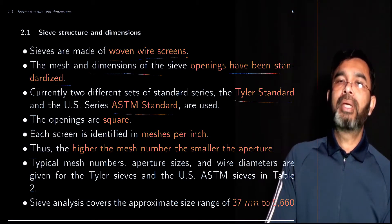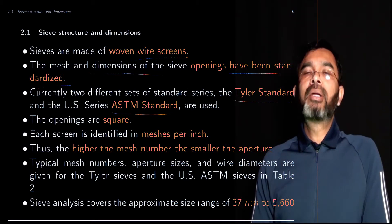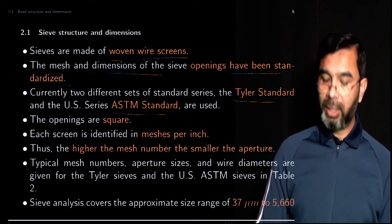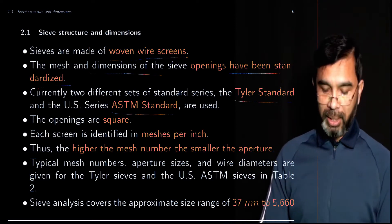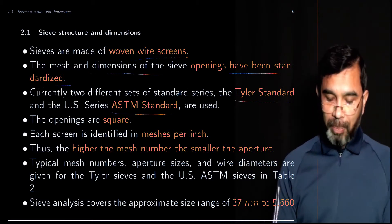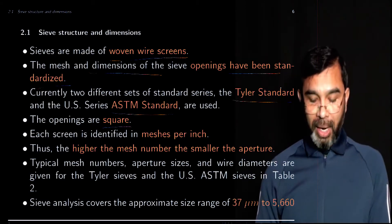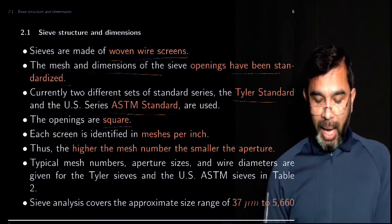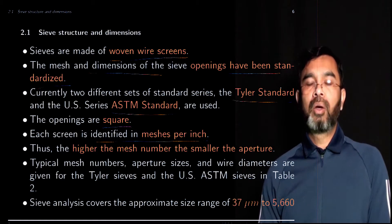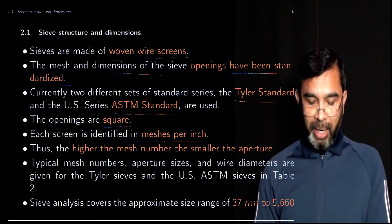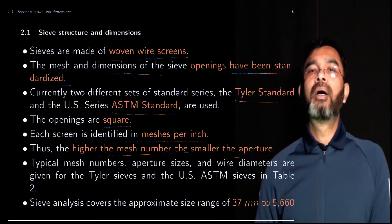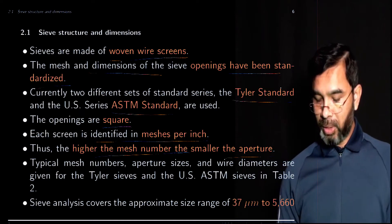Currently there are two sets of standard series: one is called the Tyler standard and the other is the ASTM standard. If you mention the type of screen and its number, you get all the properties — what the opening is, what the wire diameter is, and so on. For both standards, the screen openings are square and the screens are identified as meshes per inch, meaning how many openings there are per inch.